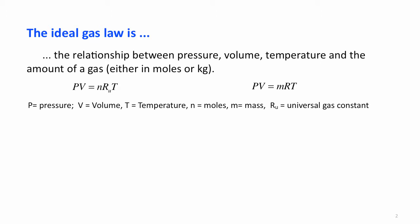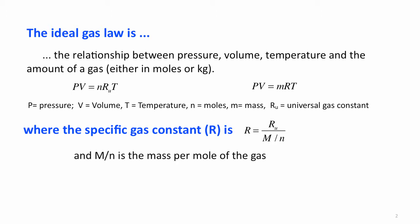Now on the right, you'll notice we have R without a subscript. This is our specific gas constant, which we can get by dividing the universal gas constant by the mass per unit per mole of the gas.